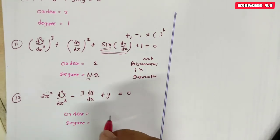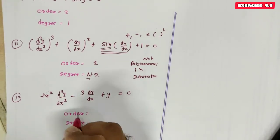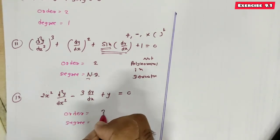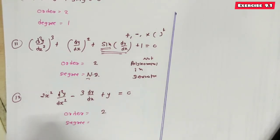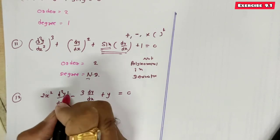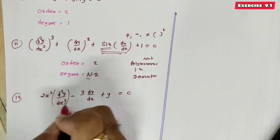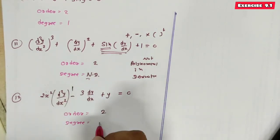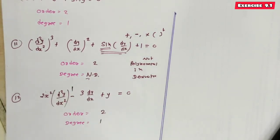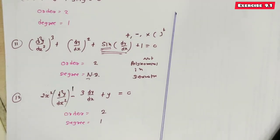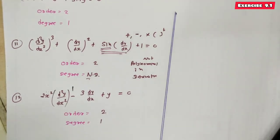Equation 12: (d²y/dx²)³ + (dy/dx)² + ... Order is 2 and its power is 1, so degree is 1. This completes Exercise 9.1.